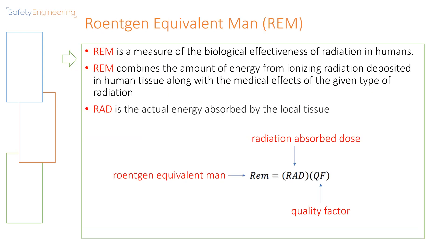Now the last equation we are going to examine is the Roentgen-equivalent man. The Roentgen-equivalent man is a measure of the biological effectiveness of radiation in humans. This combines the amount of energy from ionizing radiation deposited in human tissue along with the medical effects of the given type of radiation. This formula utilizes the rad, or the radiation absorbed dose. This is the actual energy absorbed by the local tissue. So the Roentgen-equivalent man is equal to the RAD multiplied by QF, or the quality factor.